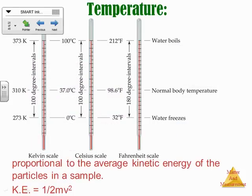Temperature is another unit we use a lot, and temperature is proportional to the average kinetic energy — it's telling you basically how fast those particles are moving. Kinetic energy is the energy of movement, so it's telling you how fast the particles are moving in a sample on average. Kinetic energy equals one-half mv squared, where m stands for mass and v stands for velocity. The bigger the particles are and the faster they're moving, the more kinetic energy they have.